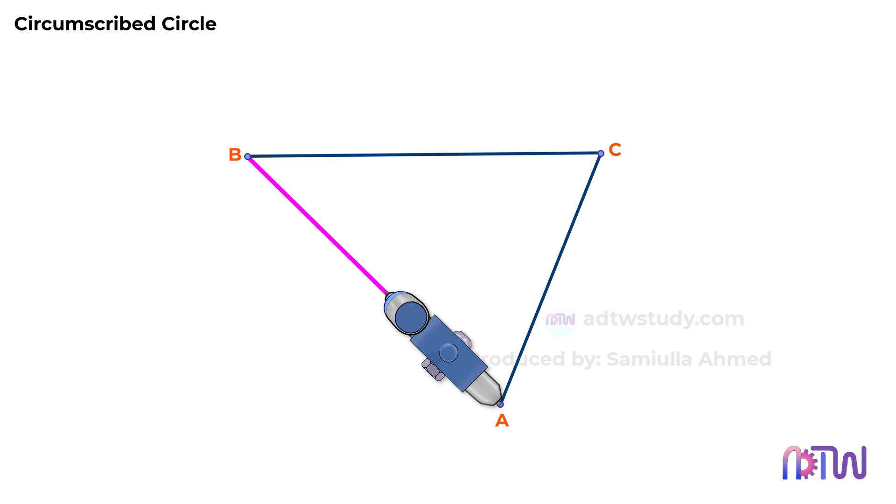Using points A and B as centers, draw arcs above and below the line segment. Next, draw a line passing through the intersections of these arcs.